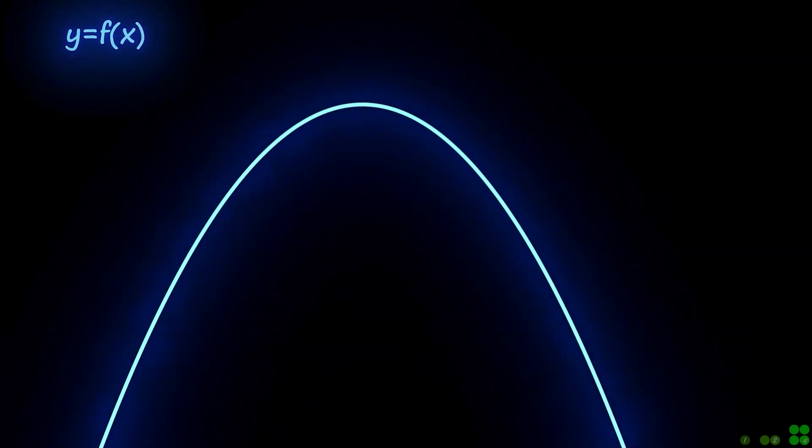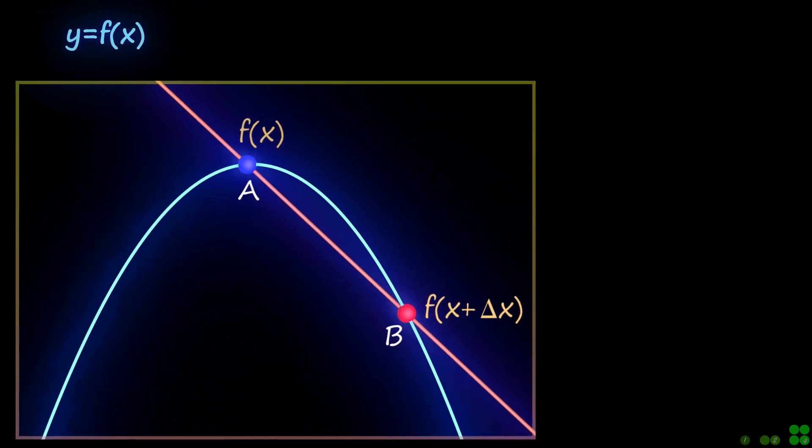Consider a smooth continuous function f of x. Let's draw a secant line passing through point A and point B.